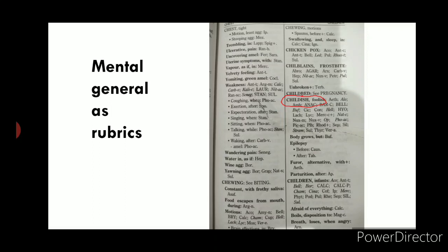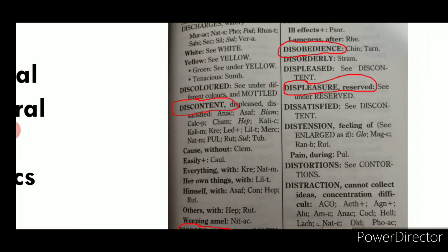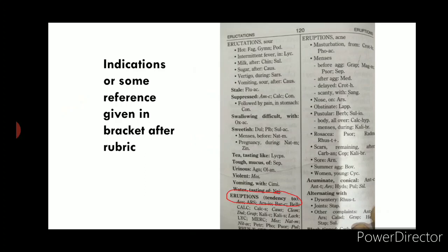Mental general rubrics are also scattered throughout this repertory. You can find rubrics like 'Childish or Foolish Behavior,' and more mental general rubrics like discontent, discordant, disgust, disobedience, etc. Every rubric is found in alphabetical order.